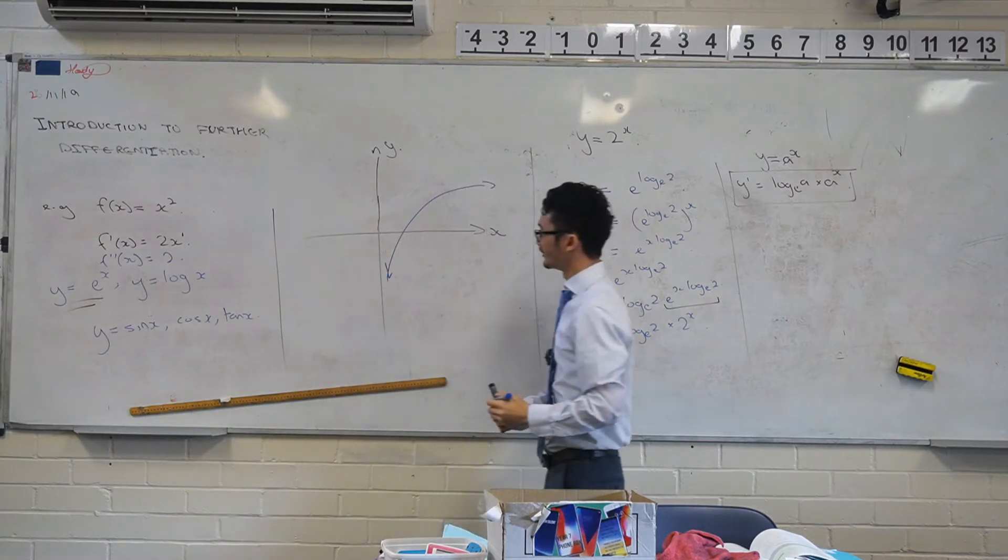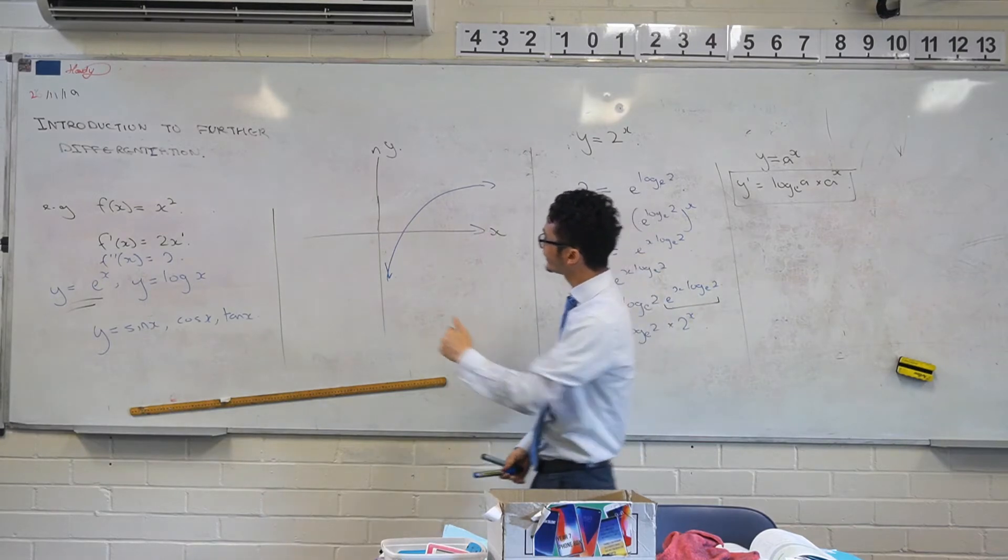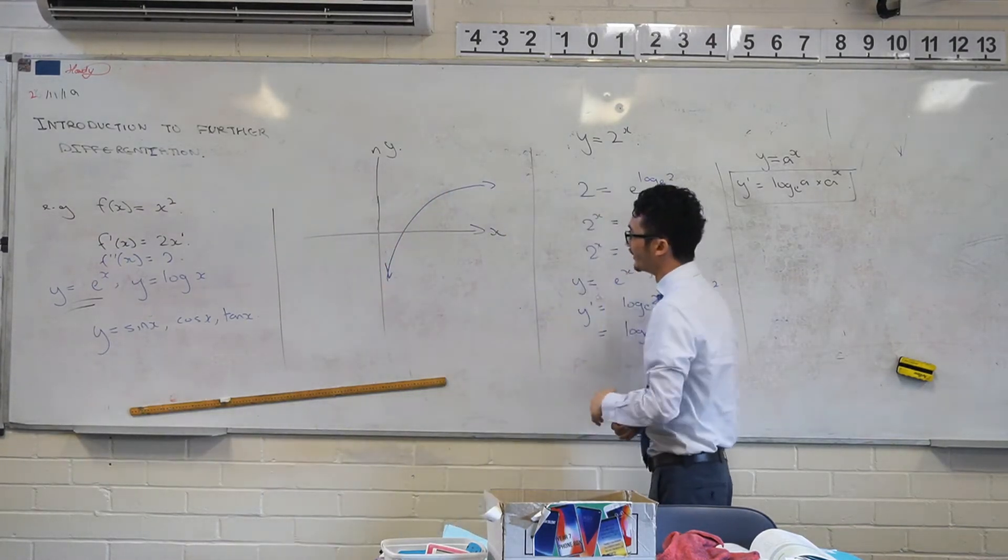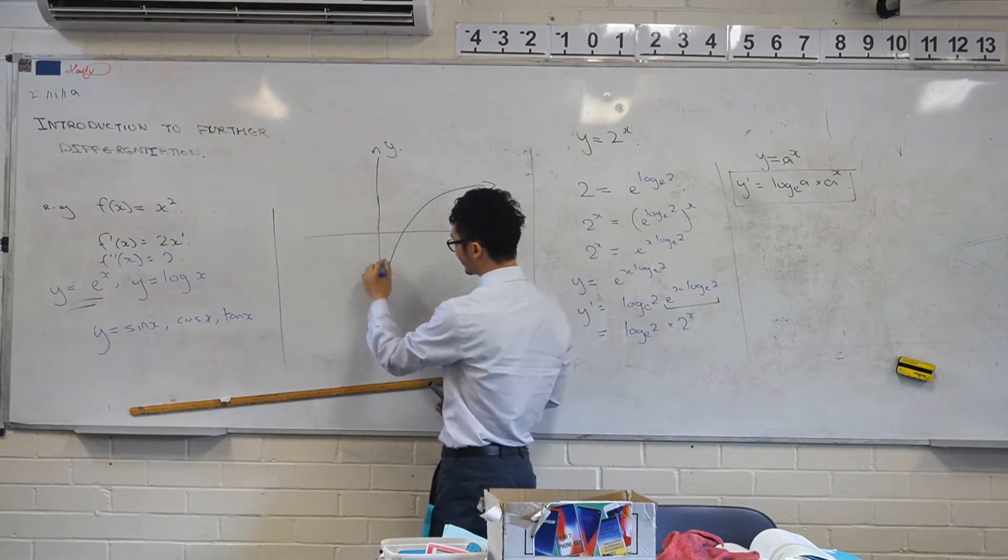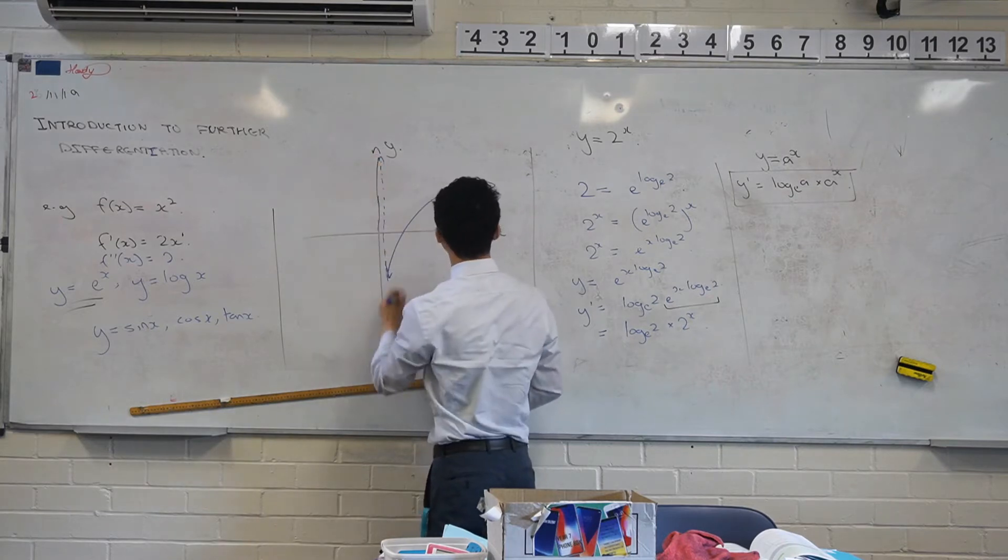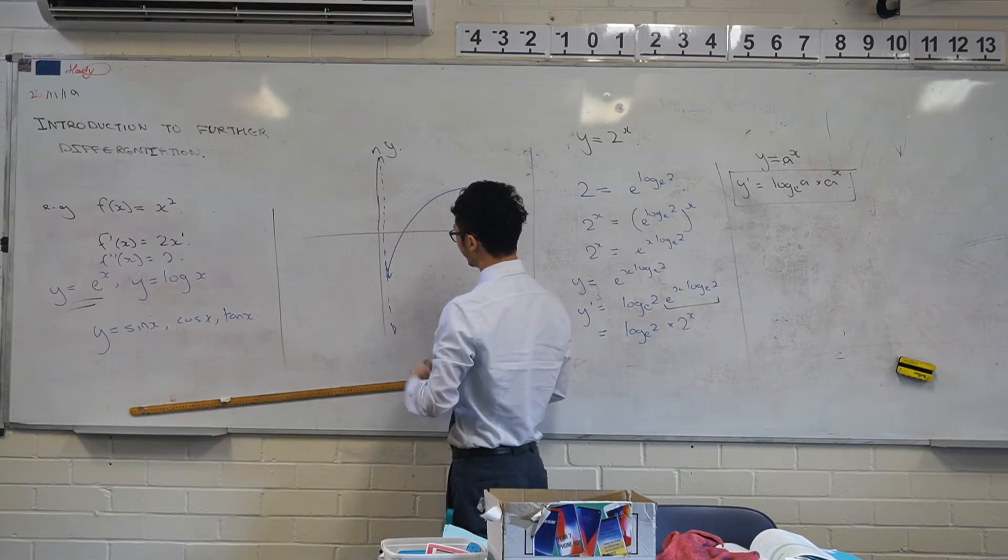It's actually the inverse of an exponential function. So if you reflect it in the line y equals x, that's what you get. Just some kind of important things. There's actually an asymptote here.